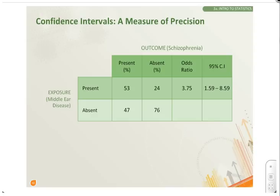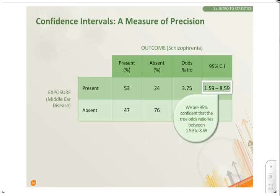In this example, looking at the association between middle ear disease and schizophrenia, we see that the confidence intervals for the observed odds ratio are between 1.59 and 8.59. This tells us that we can be 95% confident that the true odds ratio lies between 1.59 and 8.59.